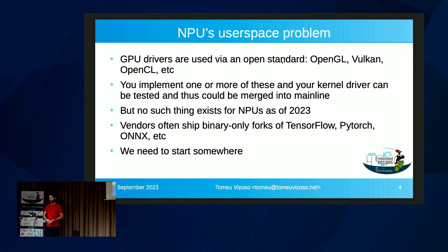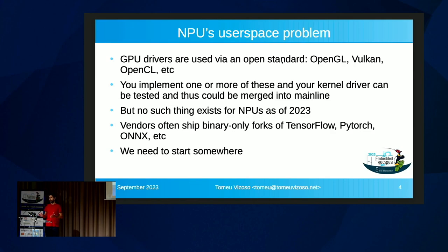What happens is that vendors are not providing an implementation of an open API. What they do is give you forks of the most common machine learning frameworks or converters. You convert the model and there's something internal that they use, which is completely private and closed — nobody knows how it actually works, maybe not even the vendor. So the situation is complicated, but we have to start somewhere, and eventually maybe it will get better.